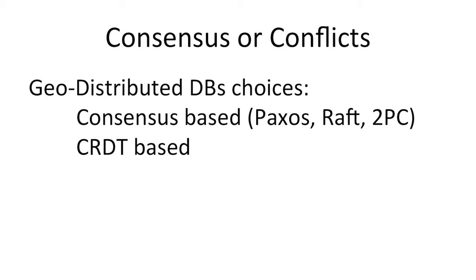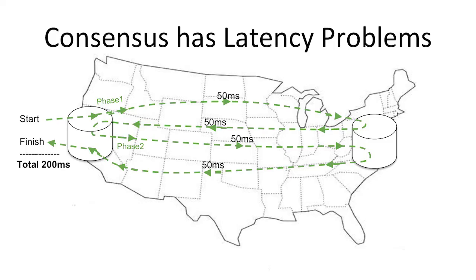Consensus is Paxos, Raft, Spanner, Fauna, FoundationDB, NuoDB — they're all essentially Paxos-based. The problem with them, if you spread them across the U.S., is you have to make two round trips. Going back and forth from San Francisco to New York twice takes 200 milliseconds. If you're updating the same information sequentially, you get a whopping five transactions per second, which is bad — prohibitively slow for a lot of applications. That's the consensus problem: latency.